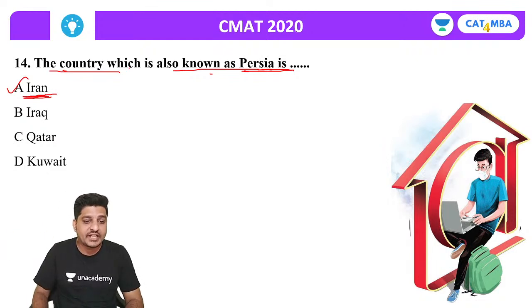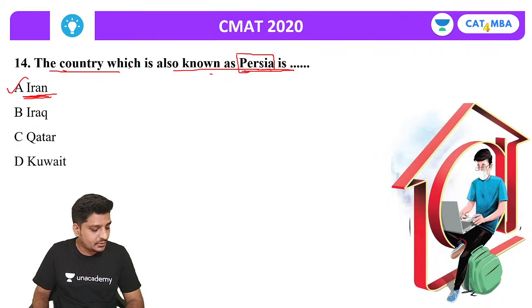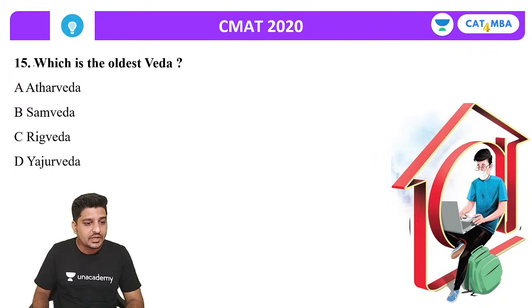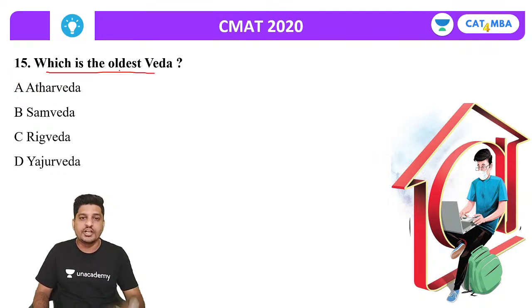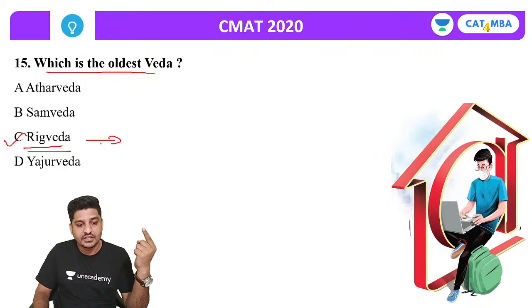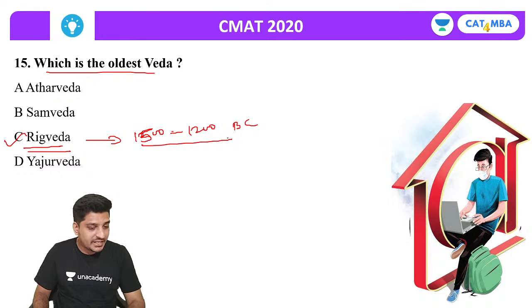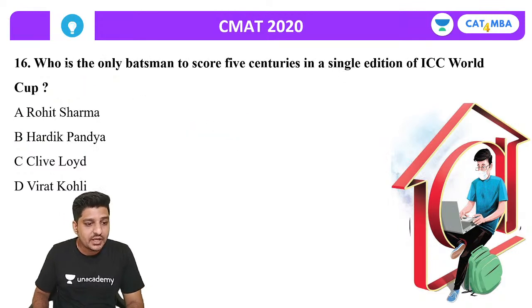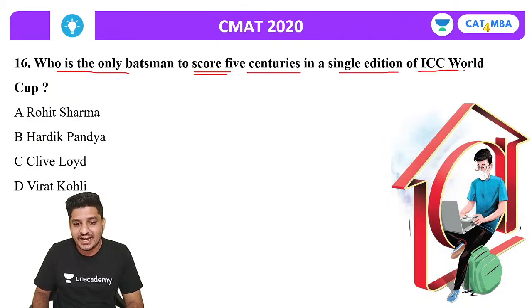Next question: Which is the oldest Veda? There are four Vedas: Rigveda, Samaveda, Yajurveda and Atharvaveda. The oldest is the Rigveda, compiled approximately between 1500 and 1200 BC.